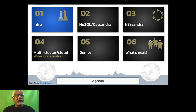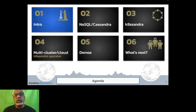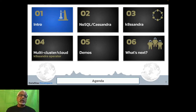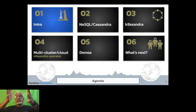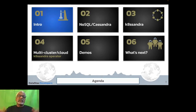The biggest challenge we face today in the community is multi-cluster, multi-cloud, multi-region, and multi-everything. We have introduced a new operator called the K8ssandra operator. Earlier we had something called the Cass operator. The K8ssandra operator sits on top of the Cass operator and deploys to multiple clouds, multiple regions, or multiple clusters.